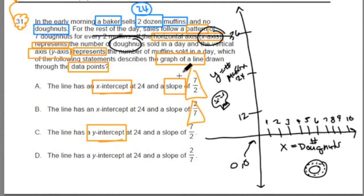Now let's graph some of the information that they give. Like, for example, this starting point. At the beginning of the day, the baker sells 24 muffins. So that means, at the start,